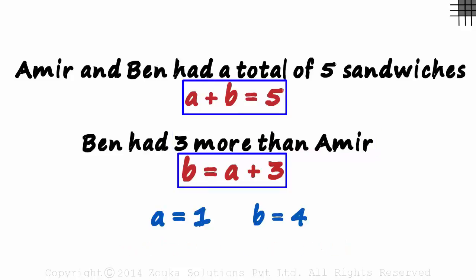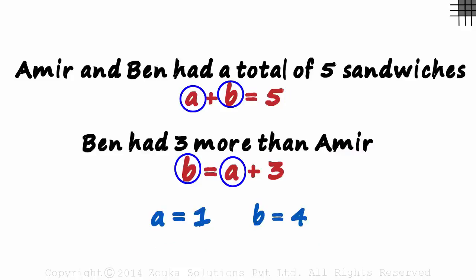These are linear equations in two variables. There are two variables in each equation and both of them have a degree one. So to get the value of two variables, you need two equations. But how do we solve for the values of A and B? Let's move on to a new page to understand that.